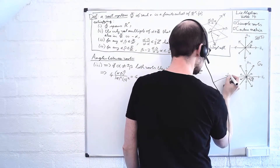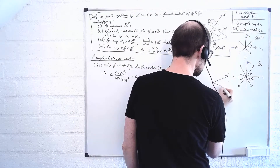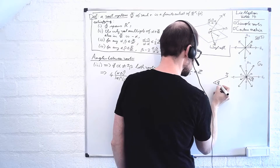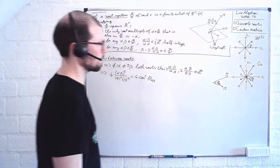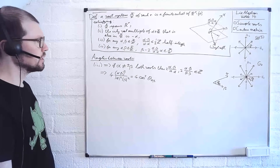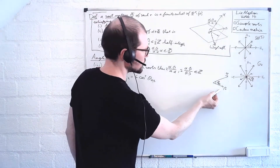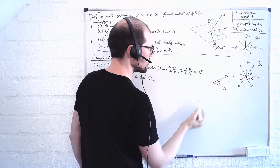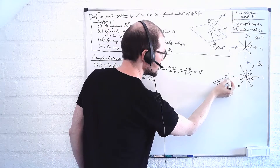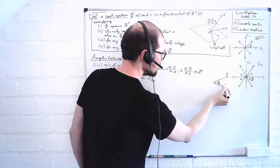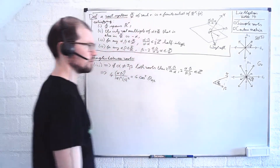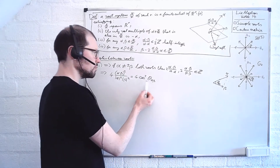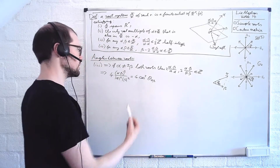So I have a root alpha, another root beta, and an angle in between. A consequence of the fact that projecting beta onto alpha gives a half-integer multiple of alpha, and projecting alpha onto beta gives a half-integer multiple of beta, is that it tells us what the possible angles are between alpha and beta.